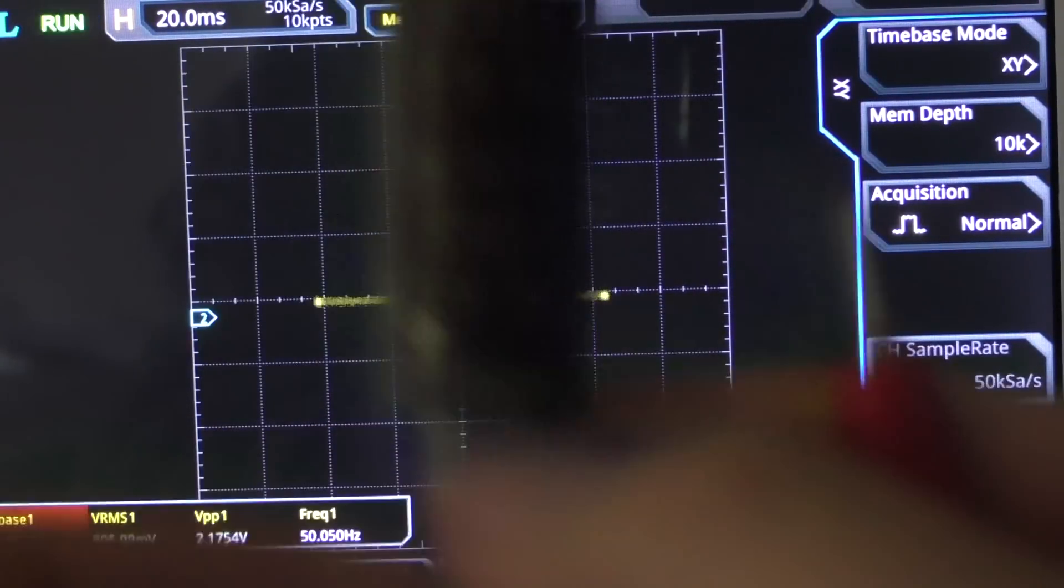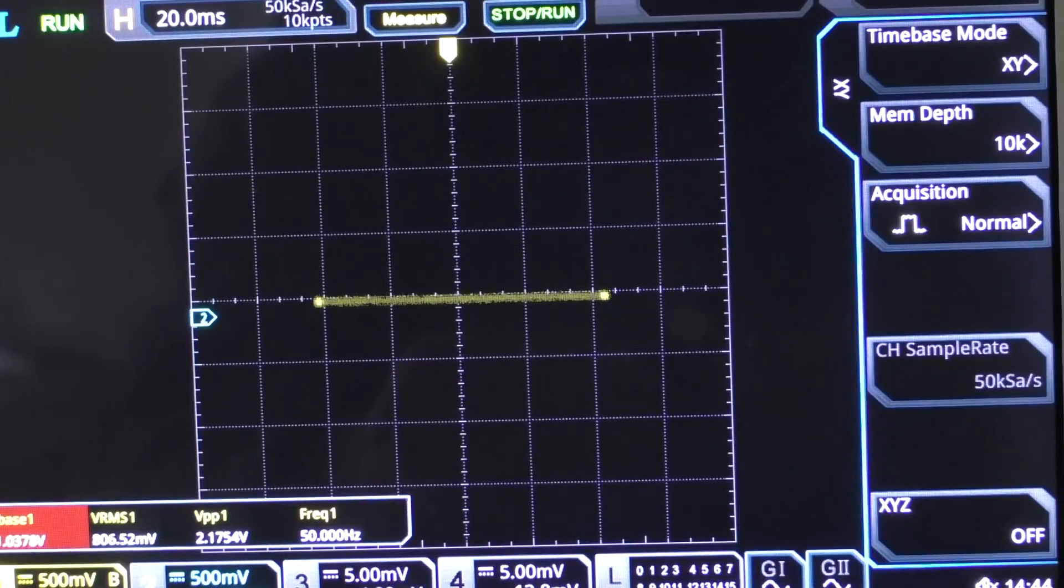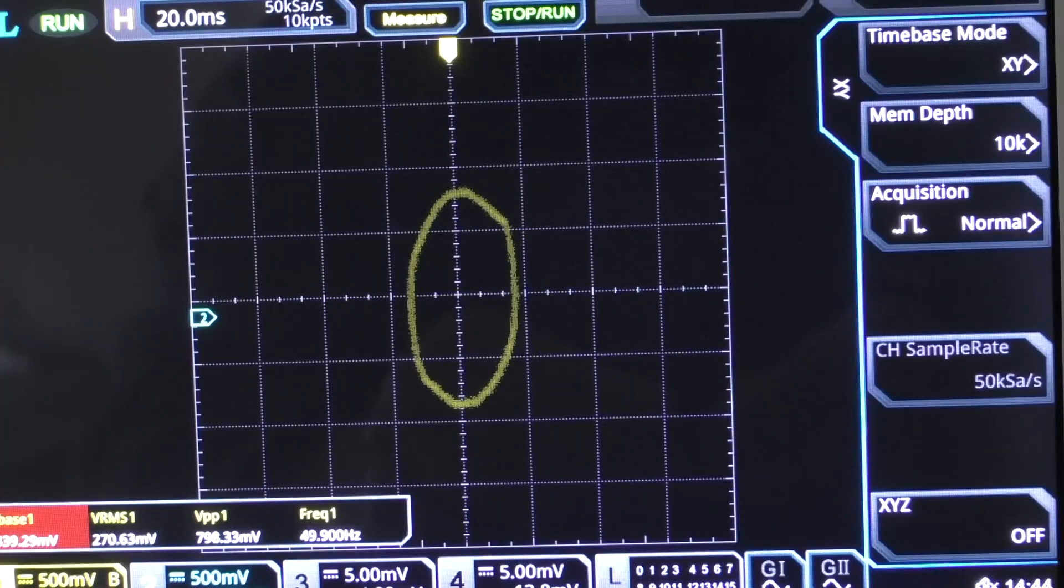Let's take a capacitor, a 100 microfarad capacitor. You see we get a circle more or less. That means voltage and current are almost 90 degrees off. We have a maximum current when there is no voltage, and we have a maximum voltage when there is no current. So that creates us a circle.